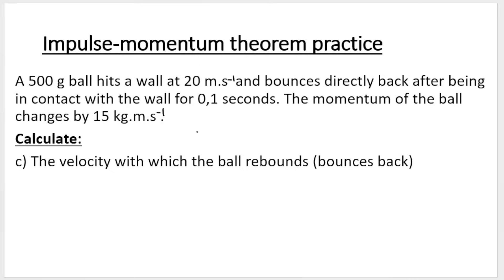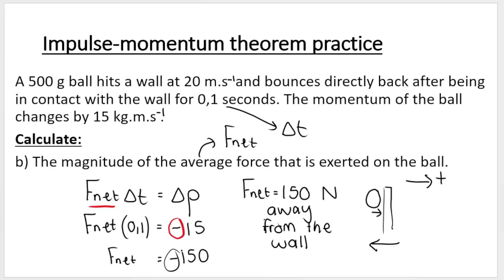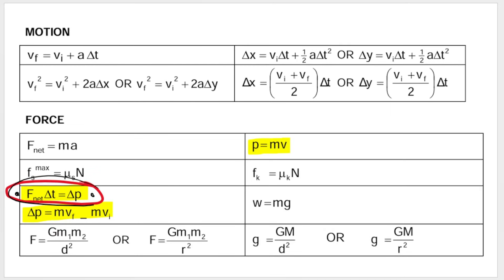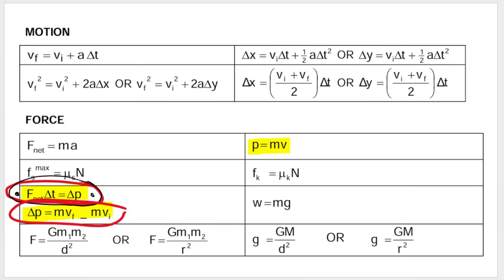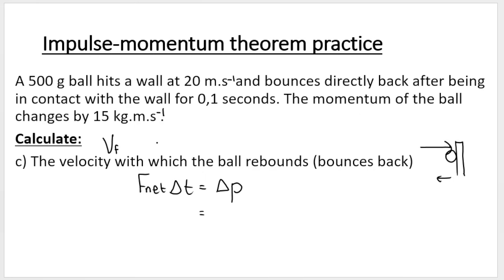The last part asks for the velocity with which the ball rebounds — meaning bounces back. They are asking for VF. It makes sense to use the impulse momentum theorem again. Write the formula first exactly as it appears on the formula sheet — do not manipulate it yet. We want VF, but you don't see VF directly. The change in momentum part of the formula can be expanded: change in momentum equals mass multiplied by final velocity minus mass multiplied by initial velocity.